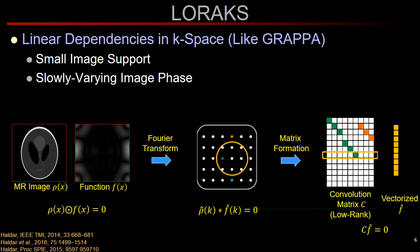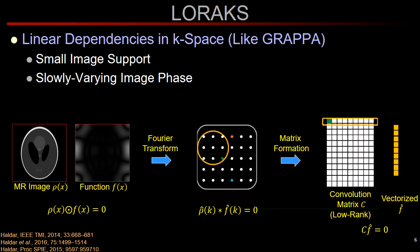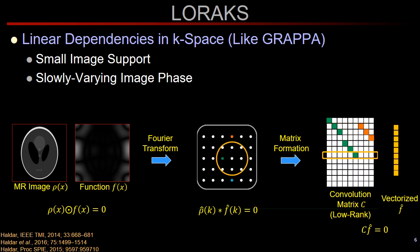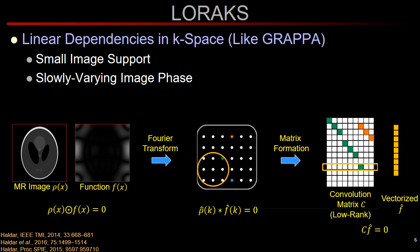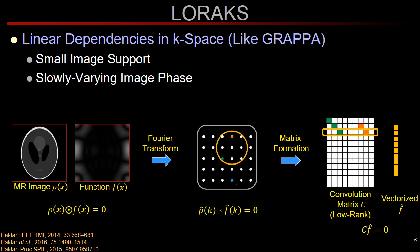To give a brief overview of LORAX: it exploits linear dependencies in k-space, just like conventional parallel imaging. In addition, LORAX can exploit limited image support as well as slowly varying phase priors. To enforce the support constraint, we multiply the image with a mask function f(x) to obtain an image of zeros. In k-space, this means we can convolve the data with an appropriate kernel to obtain a k-space full of zeros. By sliding this kernel across k-space, we build a large convolution matrix which ends up being low rank, and enforcing this low-rank property during reconstruction allows us to recover the missing k-space data due to undersampled acquisition.